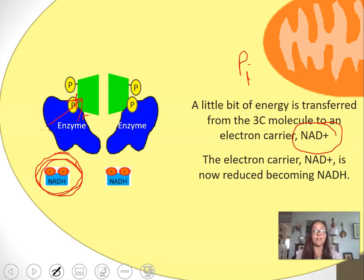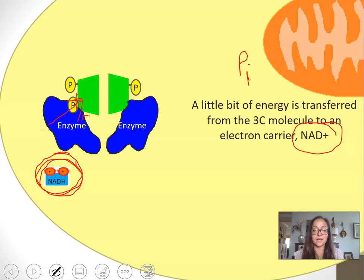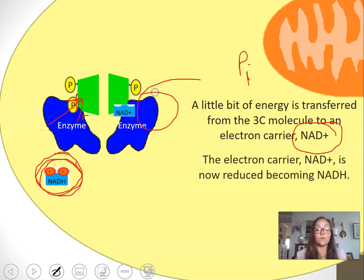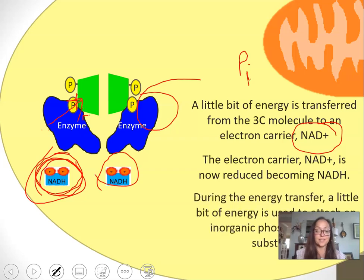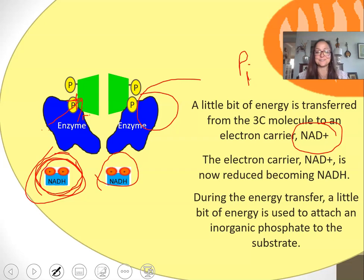If for some reason the cell was out of NAD+, could glycolysis continue? The answer is no. You need NAD+—it's kind of like a limiting factor here. If the cell were to run out of NAD+, all of glycolysis would stop, so it's actually super important that at some point we oxidize these electron carriers so they can be reused. During the energy transfer, a little bit of energy is used to attach an inorganic phosphate to the substrate.